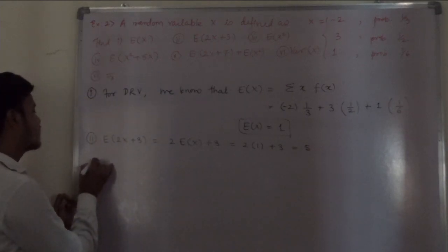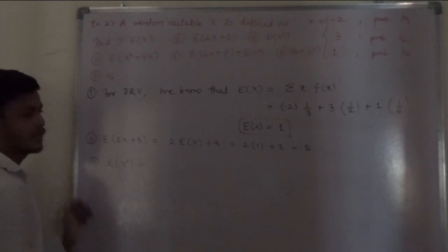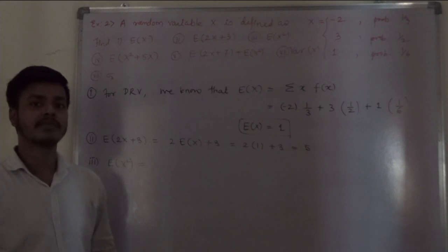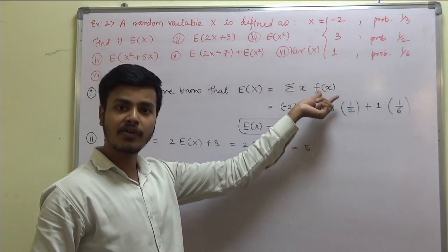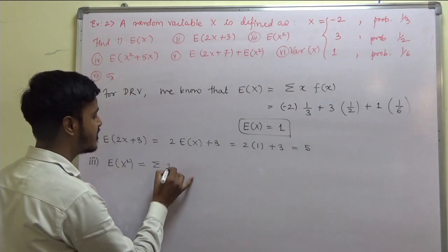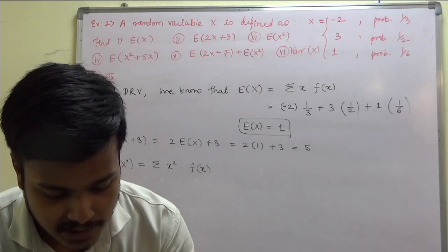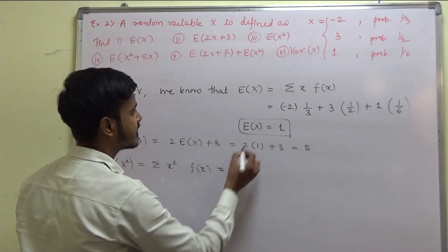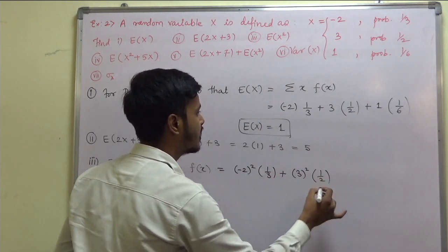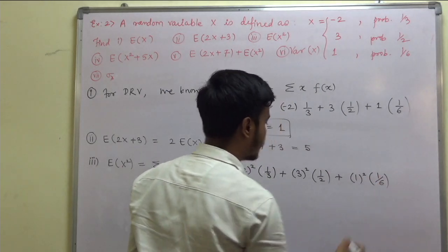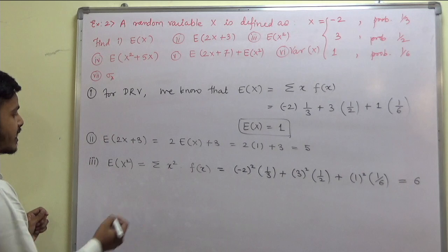Third one is expectation of x squared. If expectation of x is summation of x times f of x, then expectation of x squared is summation of x squared times f of x. This equals minus 2 squared times 1 by 3, plus 3 squared times 1 by 2, plus 1 squared times 1 by 6. Solving this gives expectation of x squared equal to 6.